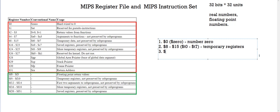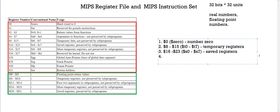Next we have our saved registers, from register 16 to 23, represented by s0 to s7. The difference between the saved and the temporary registers is that a value in the temporary register will be forgotten after a while, but the one in the saved register will be saved — it won't be temporary.